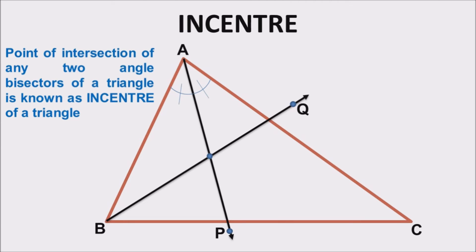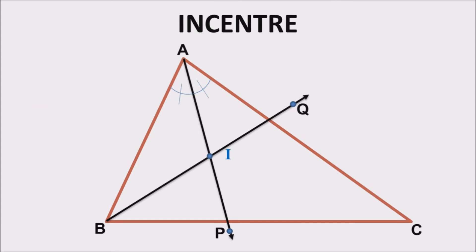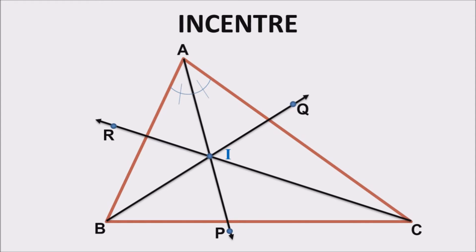The point of intersection of any two angle bisectors of a triangle is known as the incenter of a triangle. The symbol used for incenter is I. If we plot the third angle bisector, it will also pass through the incenter. So all angle bisectors are concurrent, and their point of intersection is the incenter.